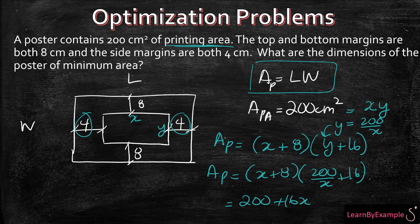So if we expand that out, it'll be 200 plus 16X plus 1600X to the power minus 1 plus 128. It's really important to stay organized and take every term on its own. So now, in order to find the minimum, we need to set the derivative to 0.